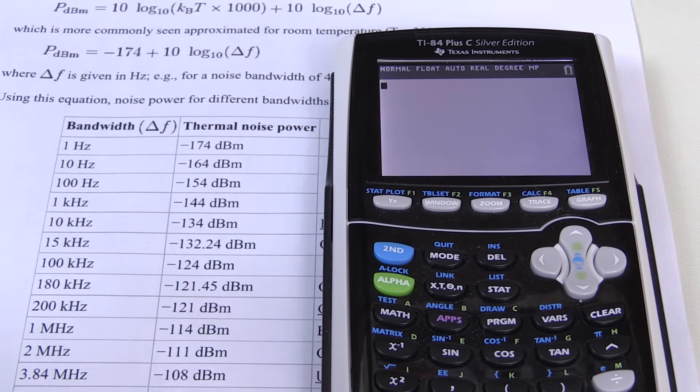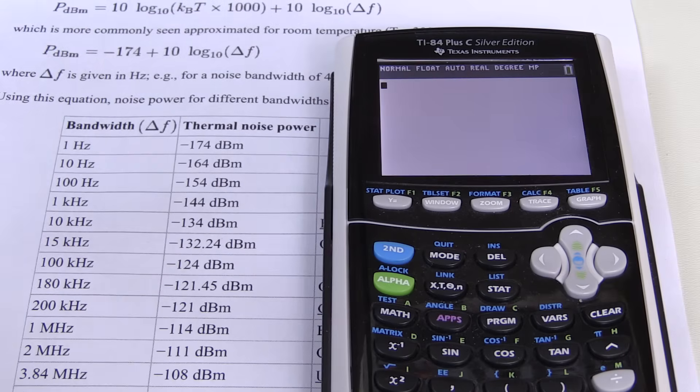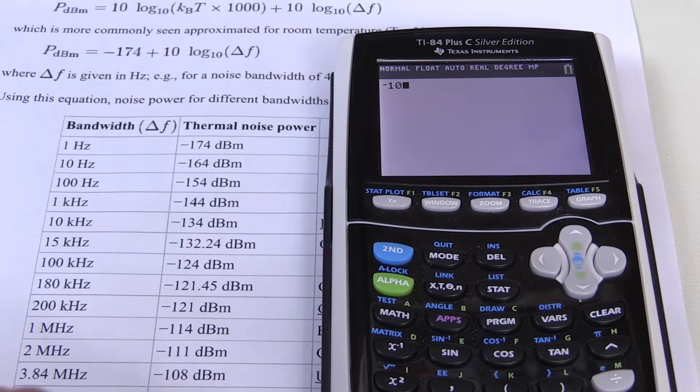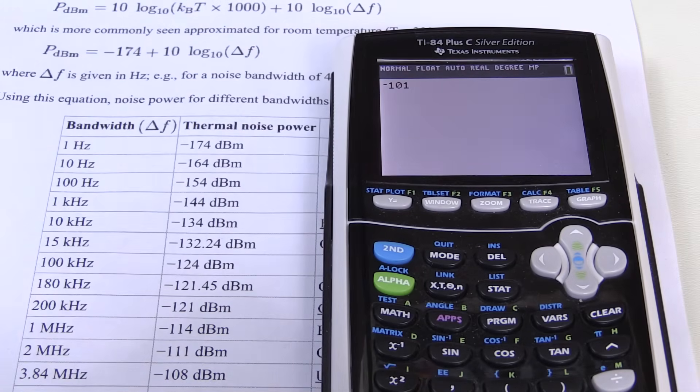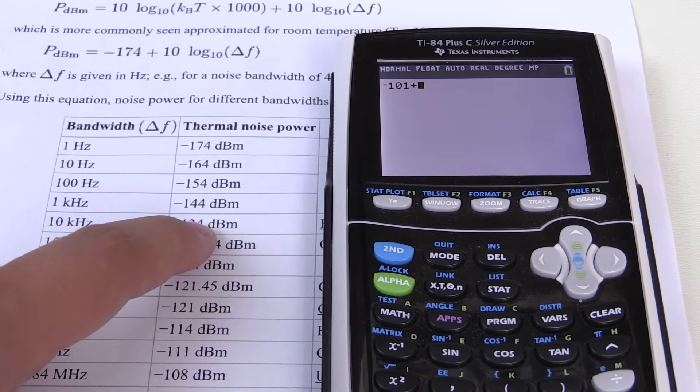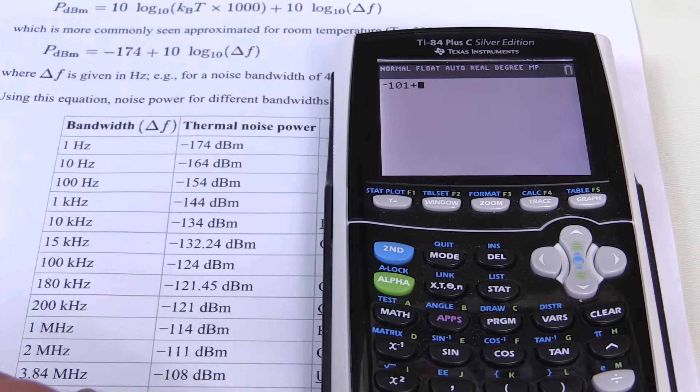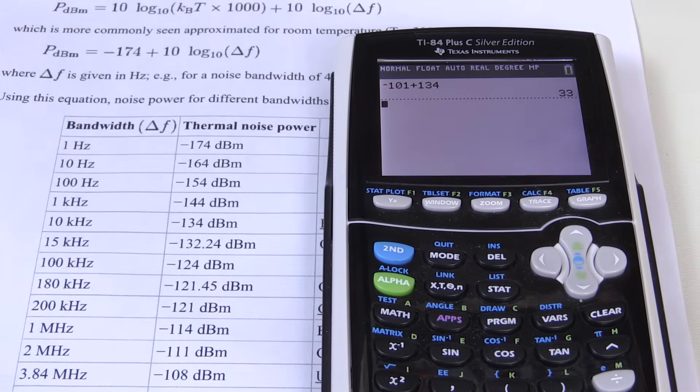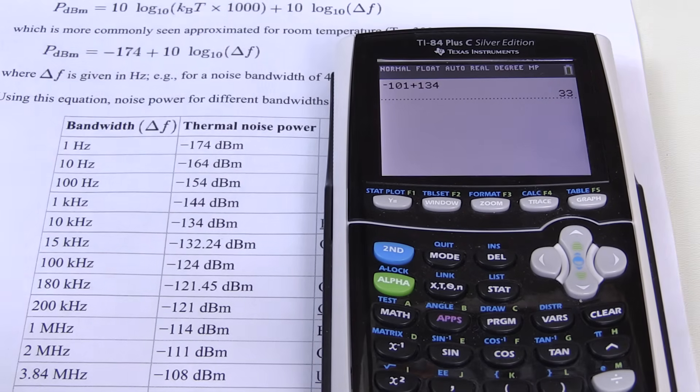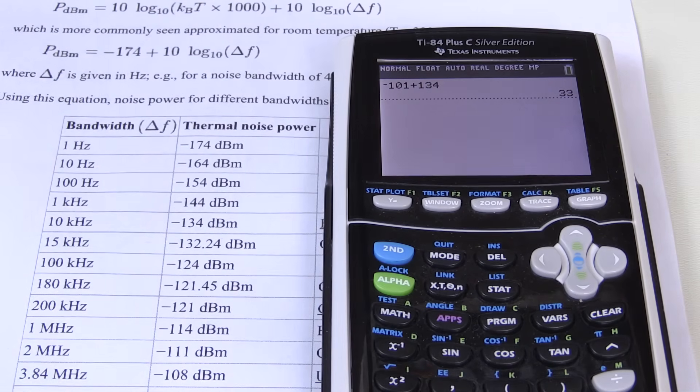So we'll take our result that we really have, that we measure from the output of the amplifier. And that's negative 101 dBm. We add what we expect, but as a positive value. So 134 dBm. And we get a number.